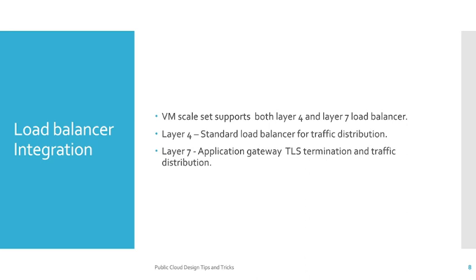Another important consideration when you have a lot of instances is load balancing — how requests are routed to the respective instances when there is an increased number of requests. VM Scale Sets support two types of load balancers: one is Layer 4, which is the standard load balancer for traffic distribution; the other is Layer 7, the Application Gateway, where you can realize TLS termination and traffic distribution.